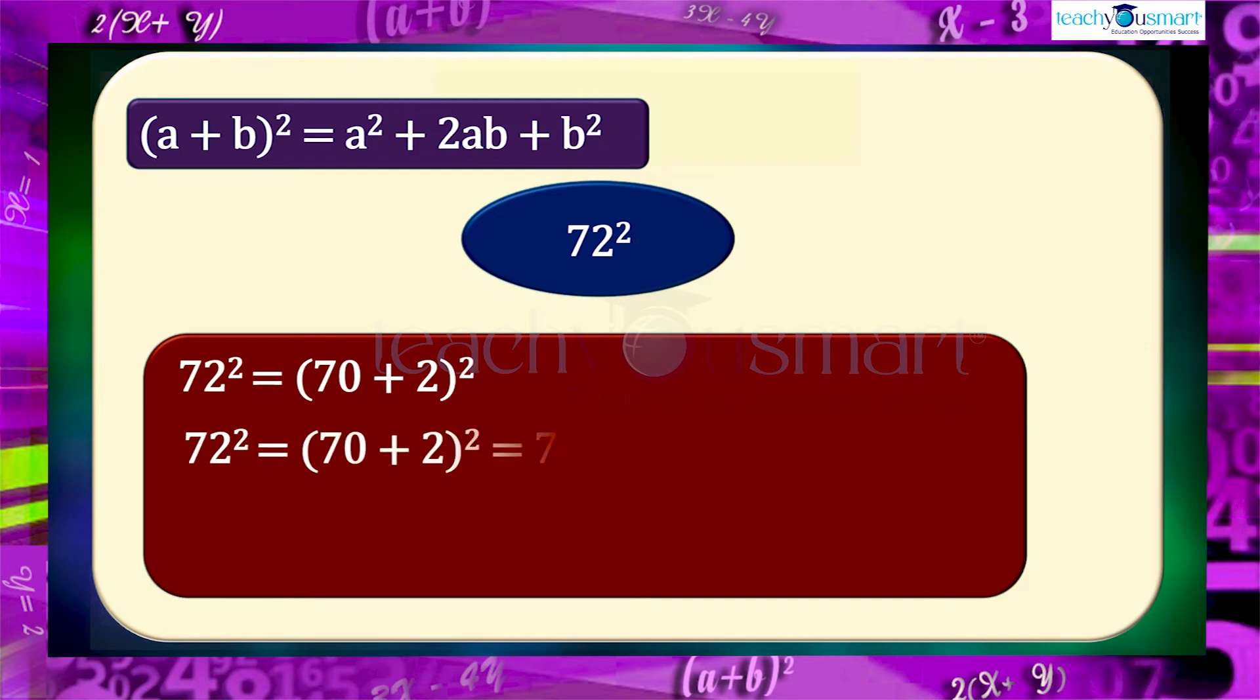(70+2)² = 70² + 2×70×2 + 2² = 4900 + 280 + 4 = 5184.